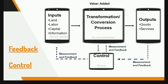In this illustration, we will see the inputs, which show the resources like labor, land, and capital, which undergo transformation into outputs of goods and services. Between inputs and outputs, the process yields value-added activities. We will talk about feedback and control in the latter part of this topic.